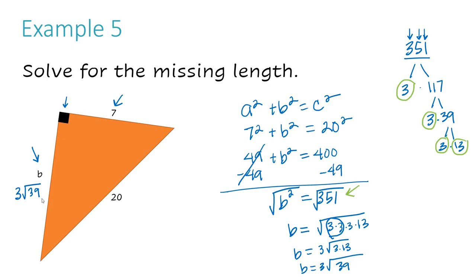Again, this is an example where the answer doesn't work out to a nice whole number, but that's okay. In this form, 3 square root 39 is the most precise answer. Don't type it into a calculator and write a decimal as your answer unless the directions specifically say to round to the nearest hundredth. In my opinion, leaving it as a radical is more simplified, more precise, and neater than a long decimal. A decimal would be rounded or estimated — the radical form is the true answer.